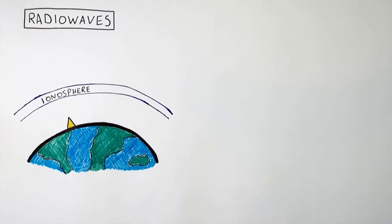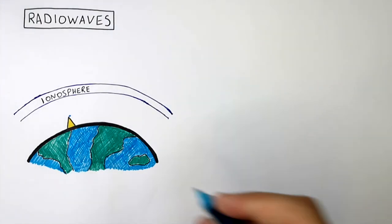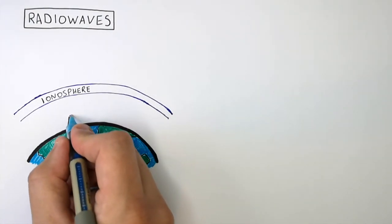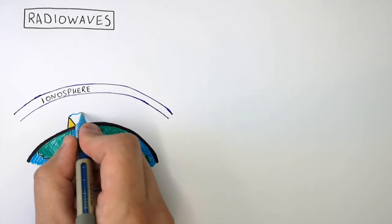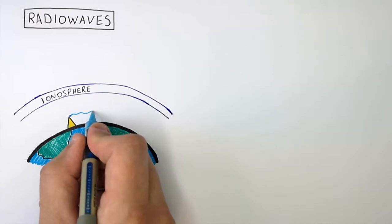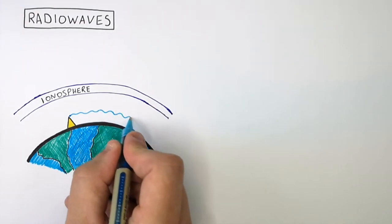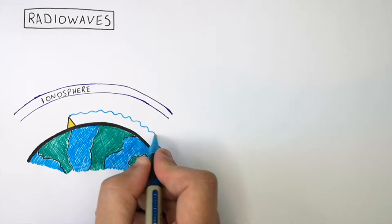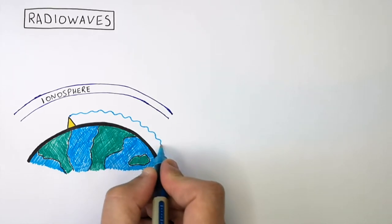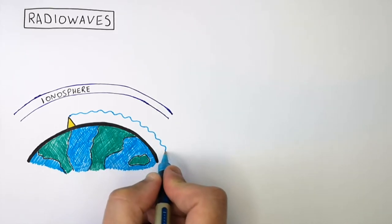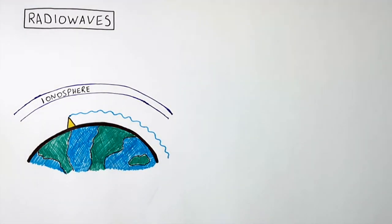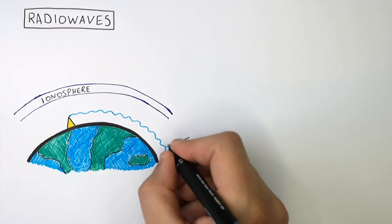Let's now compare long and short wave radio waves. This here is a transmitter of long wave radio waves. These long wave radio waves are able to diffract around the Earth's curvature, so they can travel a long way.